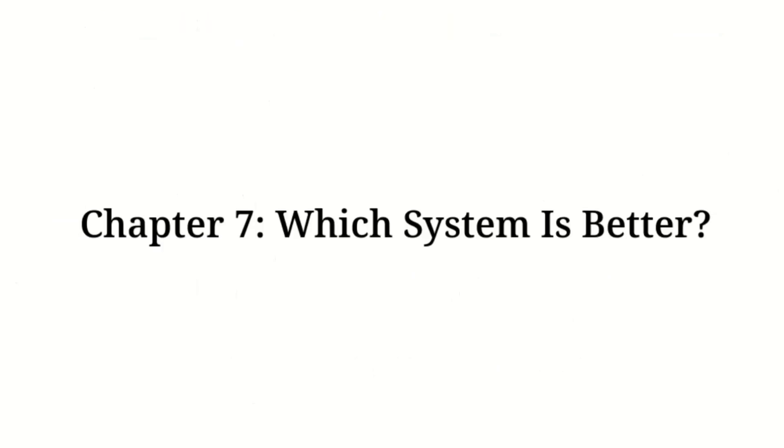Chapter seven, which system is better? So, which system is better? Well, it depends. The complex system is simpler and widely used. It's perfect for most applications, from engineering to quantum mechanics. But the virtual system offers something unique.